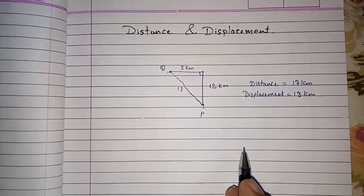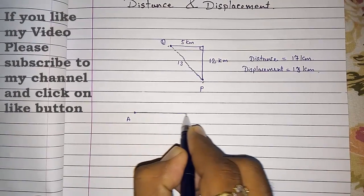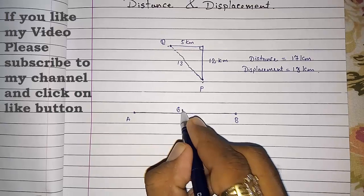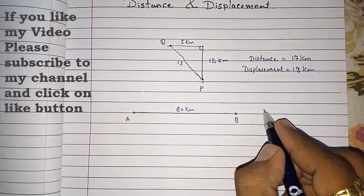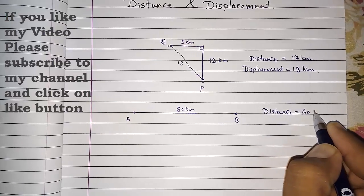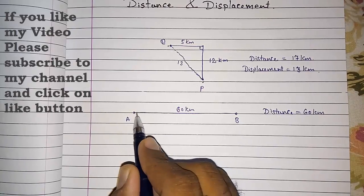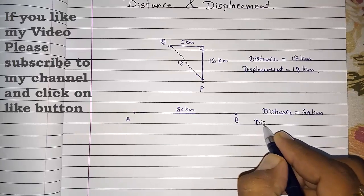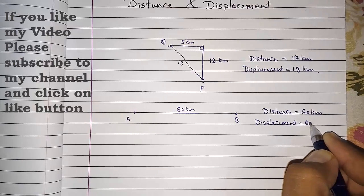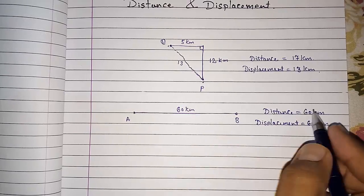Let me give you one more example. Shyam is moving from point A towards point B and reaches there — this is 60 kilometers away. So what will be the distance? The distance will be 60 kilometers. And the displacement? Here he is moving in the same direction, so displacement will also be 60 kilometers, because the shortest distance from point A is the same as the distance traveled.